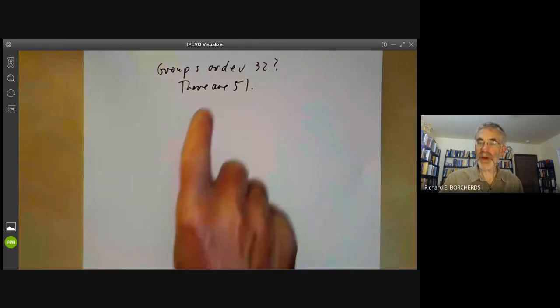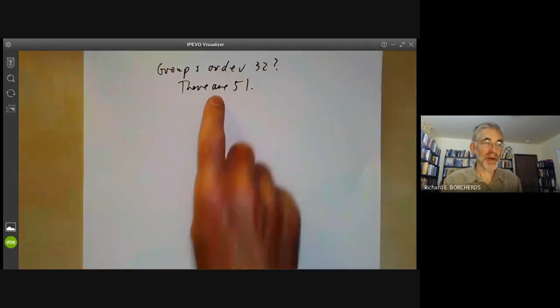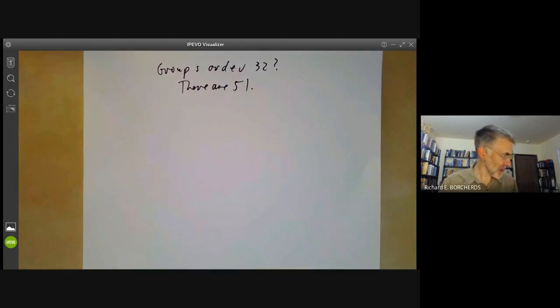So what do you do if you want to understand groups of order 32? Well, what you can do is you can look them up in the big red book of groups of order 32, and there really is a big red book of groups of order 32. I have a copy here. If you look carefully you might be able to see it's by Marshall Hall and James Senior and it says the groups of order 2 to the n for n less than or equal to 6. This book is huge, it doesn't actually fit on my bookshelf.